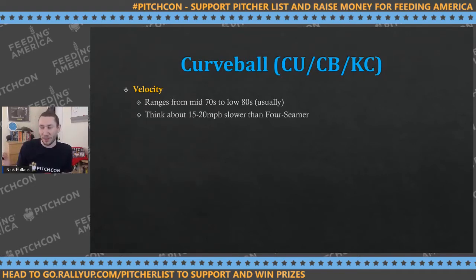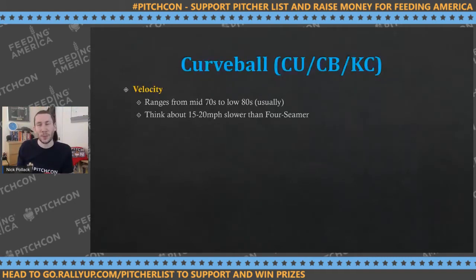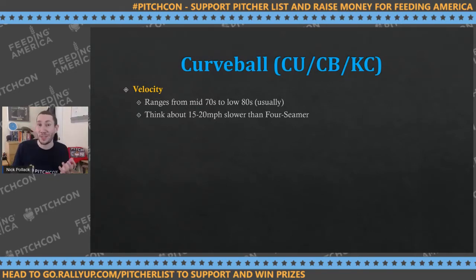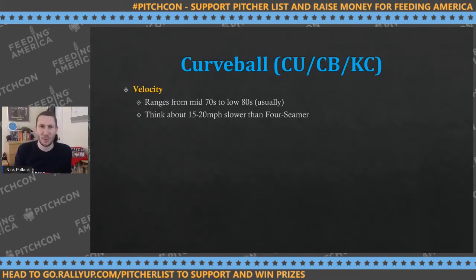Some guys like Yordano Ventura threw curveballs at 87-89 mph, which was ridiculous. Lance McCullers and Dylan Cease throw mid-eighties curves. Remember: four-seamers and sinkers are your baseline for understanding velocity with everything else. If you see a pitcher throwing 86, then sliders are probably upper seventies and curveballs around 70. If he's throwing 98, secondary pitches might touch 90-91, and curve could be around 82.